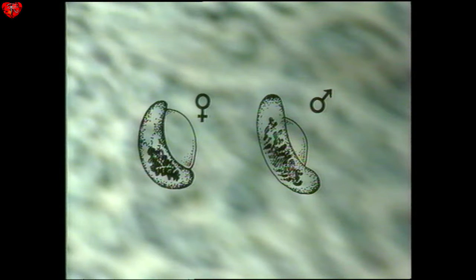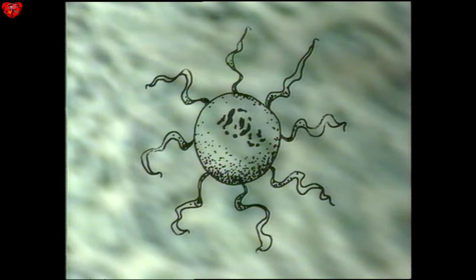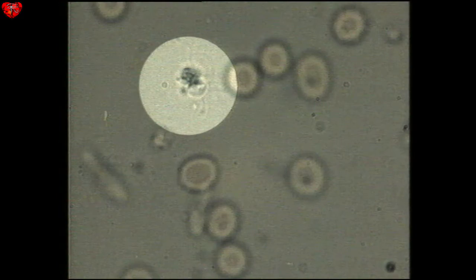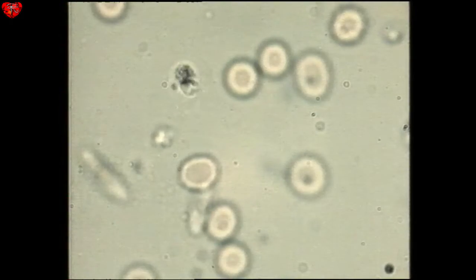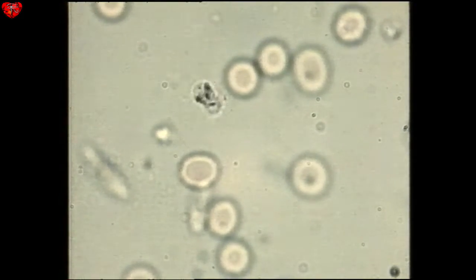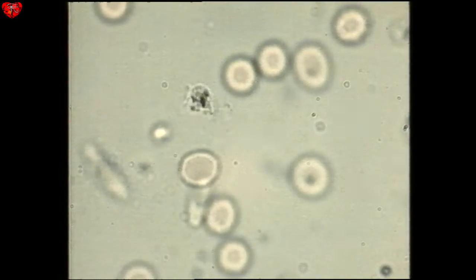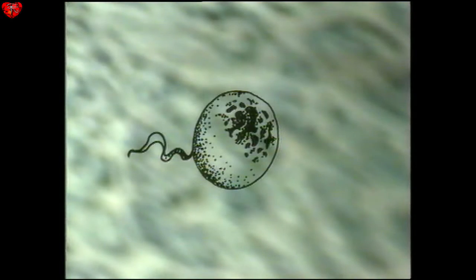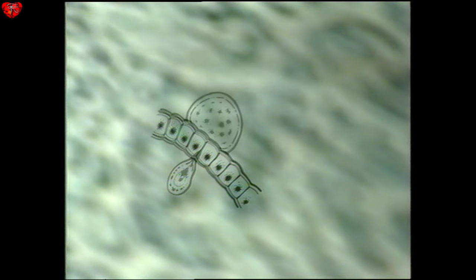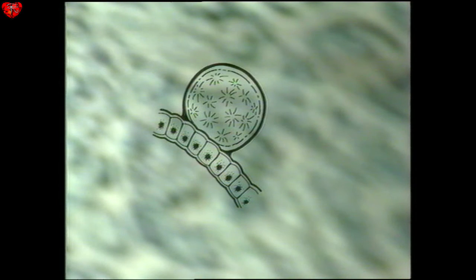A male and a female gametocyte. The male gametocyte ex-flagellates to produce the motile, thread-like microgametes. When a male contacts a female, the two fuse to produce an invasive motile zygote, the ookinete. This swims through the blood meal and penetrates the stomach wall, where it grows rapidly into an oocyst.